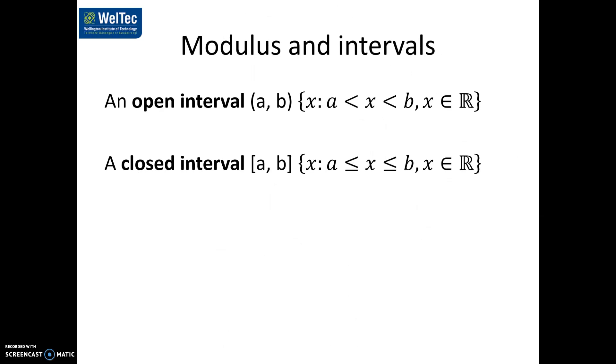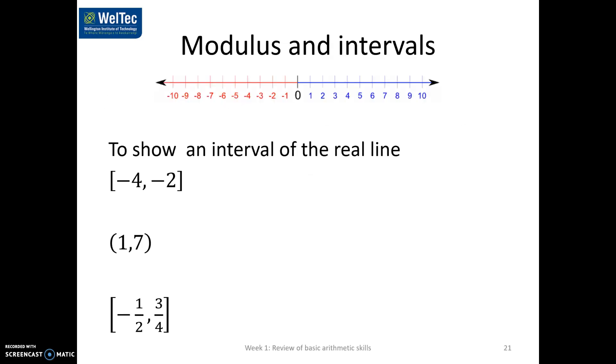Just to rerun there, an open interval is with round brackets, and this curly stuff here means the set of all elements x, such that a is smaller than x, which is smaller than b. The square brackets, it includes a and b, so it's less than or equal to, it's a closed interval. You can show all these on a number line. This goes from negative 4 to negative 2, and it's closed, so it's circled. The round one is the open, so you've got the open at 1, and the open at 7. So this would be negative 4 is less than or equal to some value of x, which is less than or equal to negative 2, and so on.